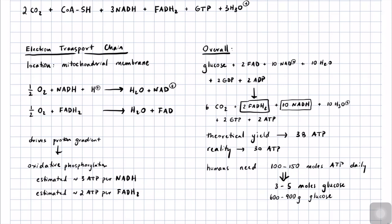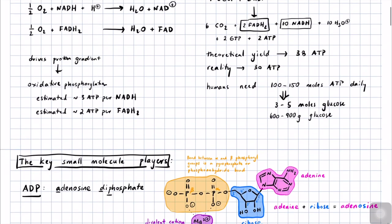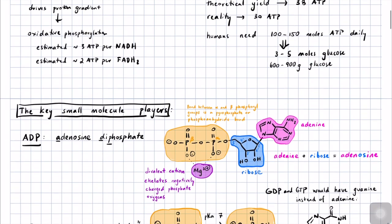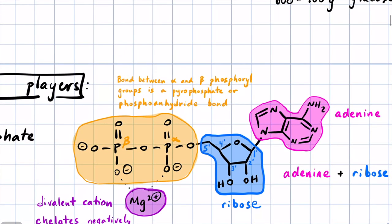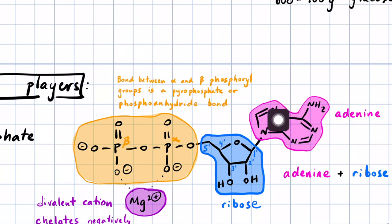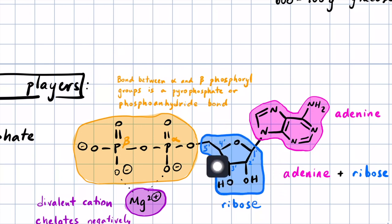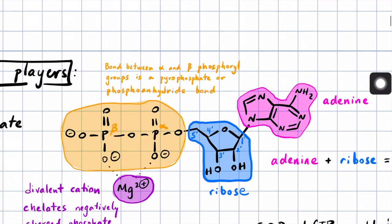Before we get into the specifics of the chemical mechanisms of glycolysis and the citric acid cycle, I wanted to introduce the key small molecule players. First we're going to introduce adenosine diphosphate, ADP. Looking at the ADP molecule more closely: A is for adenine, which is a purine base with a fused 6- and 5-membered ring, four nitrogens in the ring, and an amino group outside. In blue is the 5-carbon sugar pentose, called ribose.